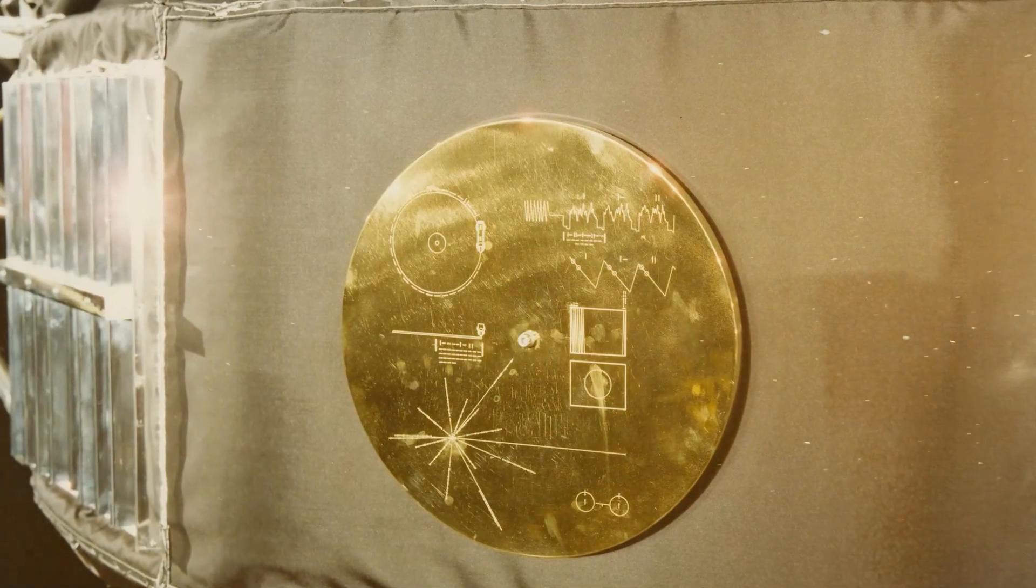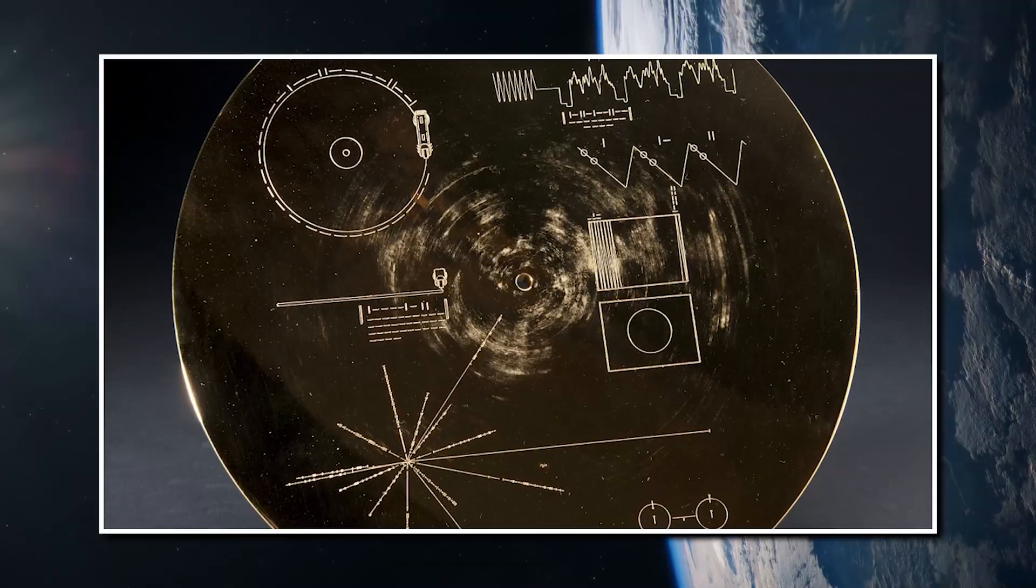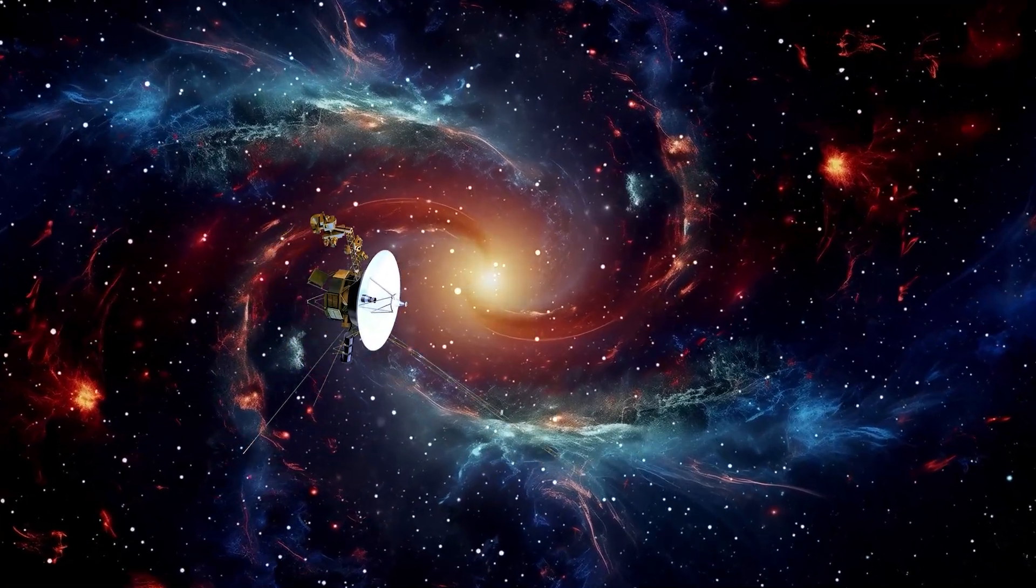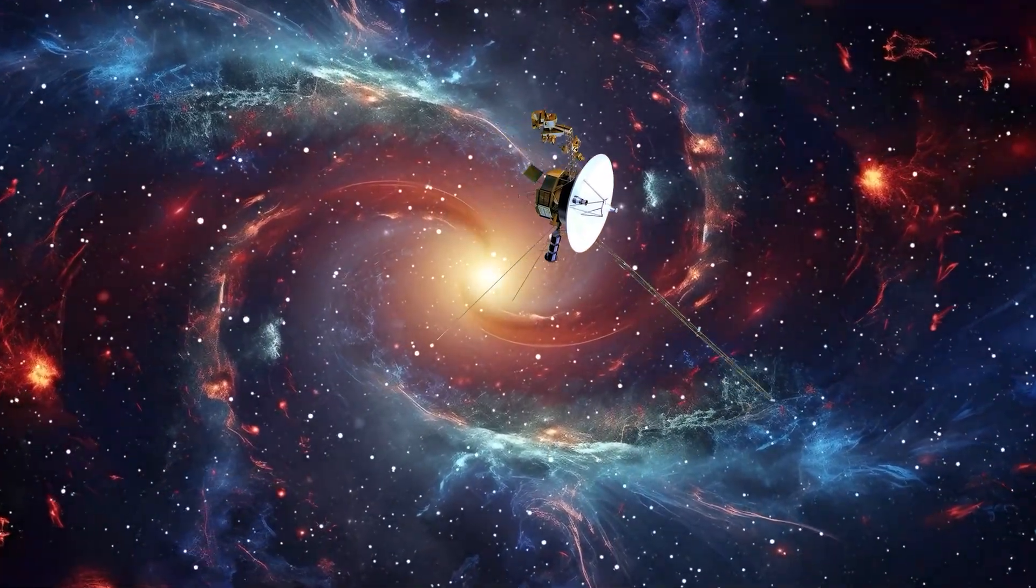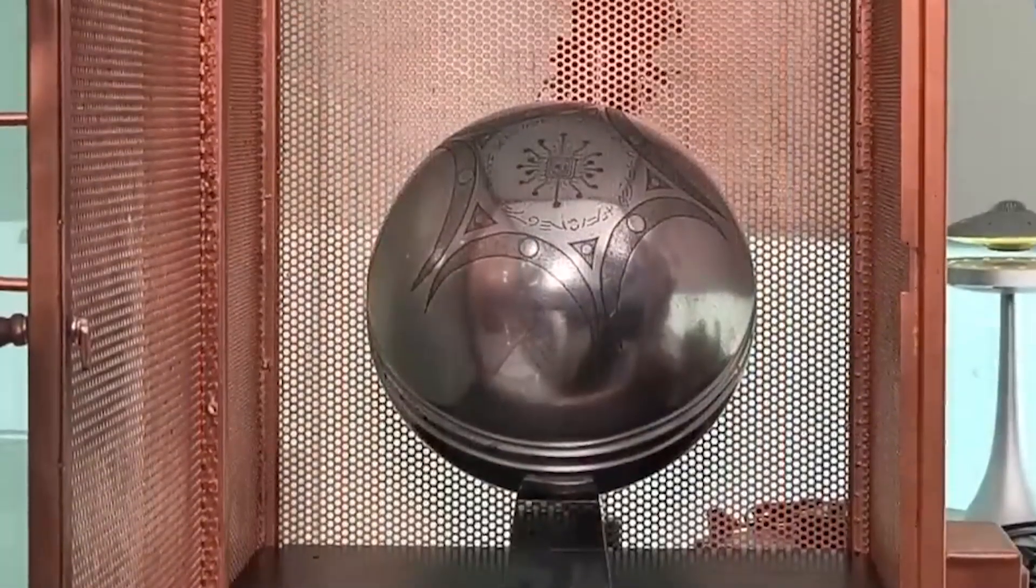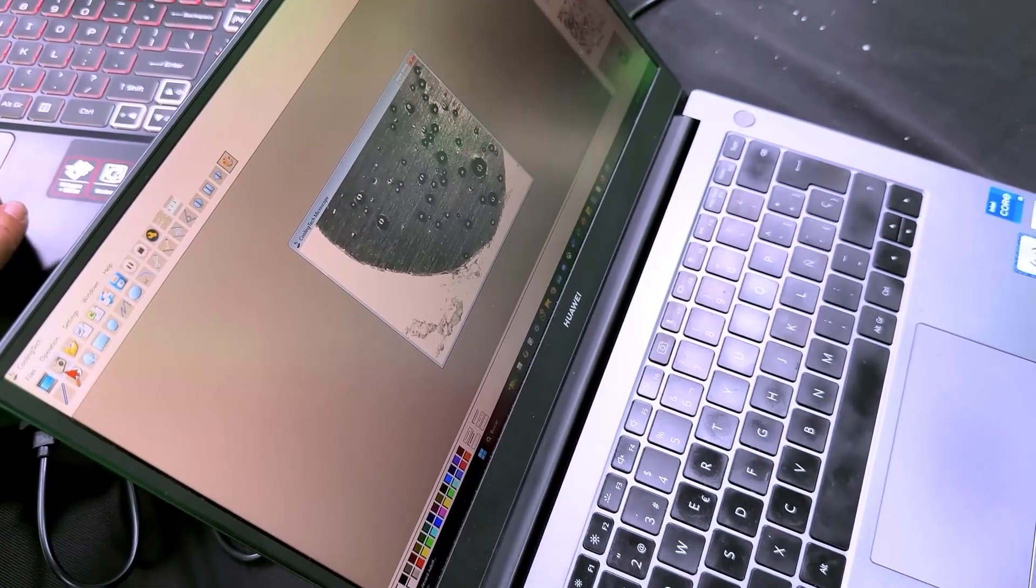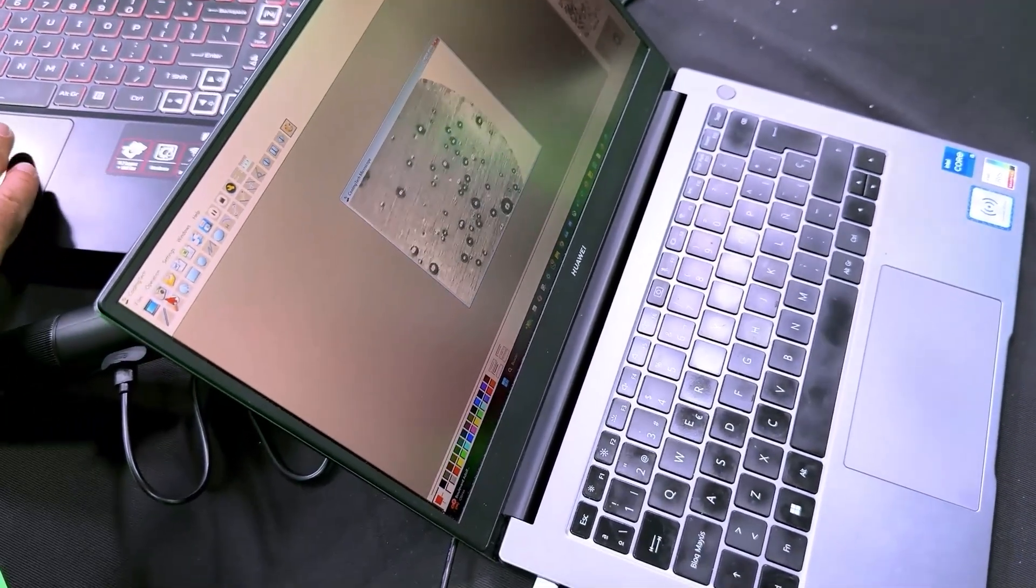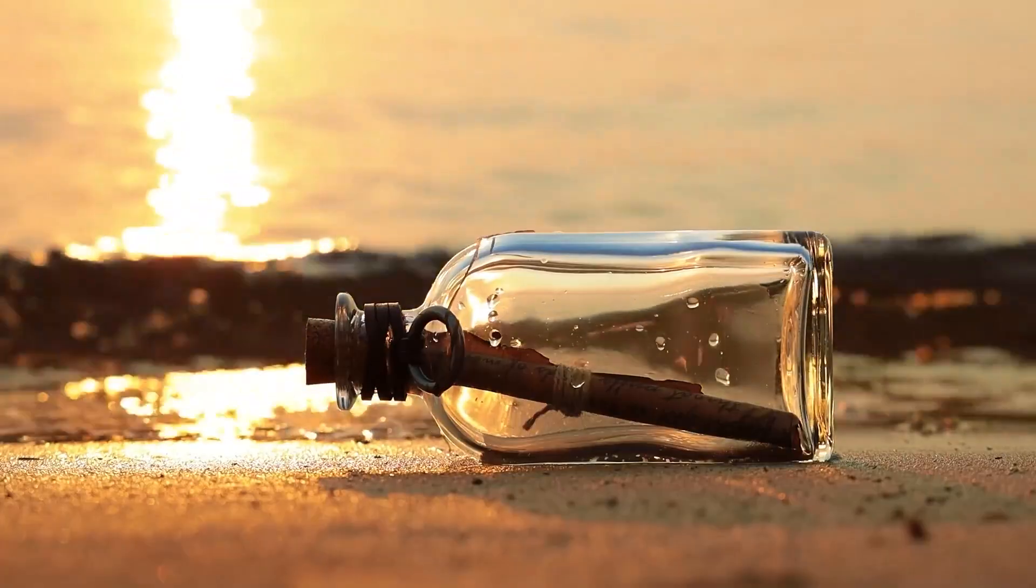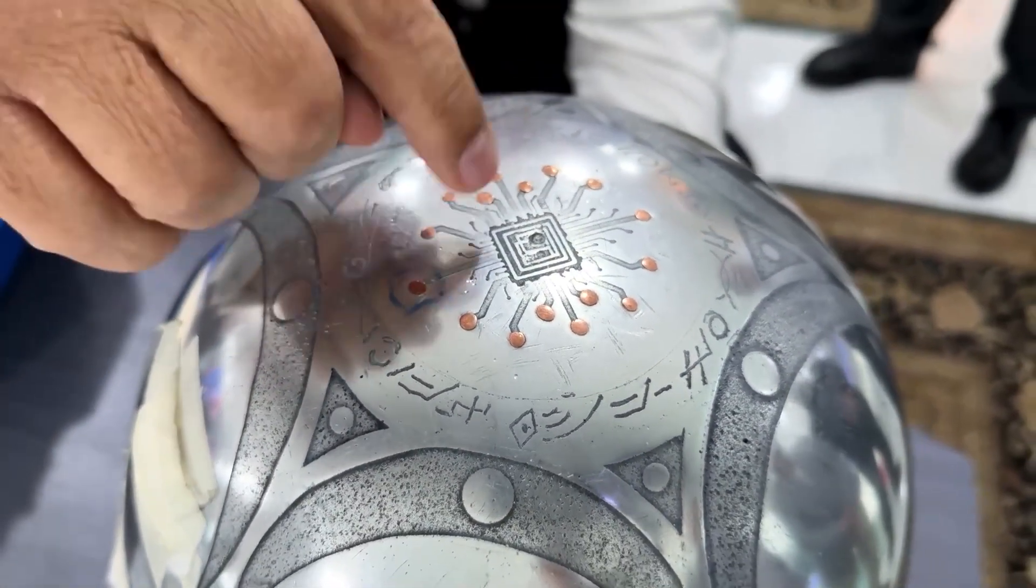Think about what we did with the Voyager Golden Record. We launched a probe into space carrying pictures, music, and a map showing aliens how to find Earth. We wrote our return address on it and sent it out into the cosmos. What many overlook is, what if this sphere is the same thing, but for a civilization so advanced, they don't use radio waves? What if they send physical objects encoded with the laws of physics and a map home?